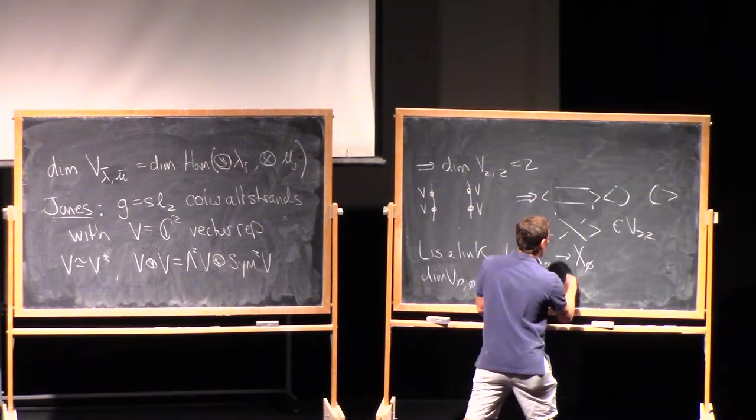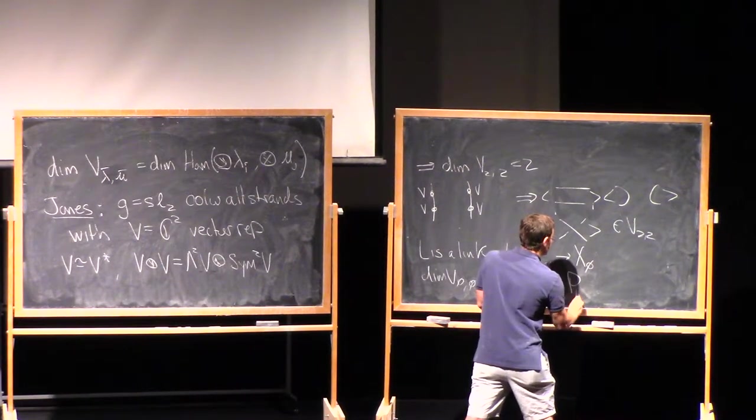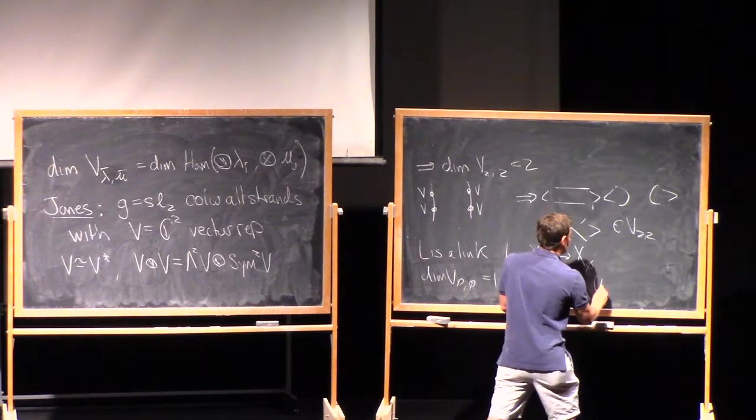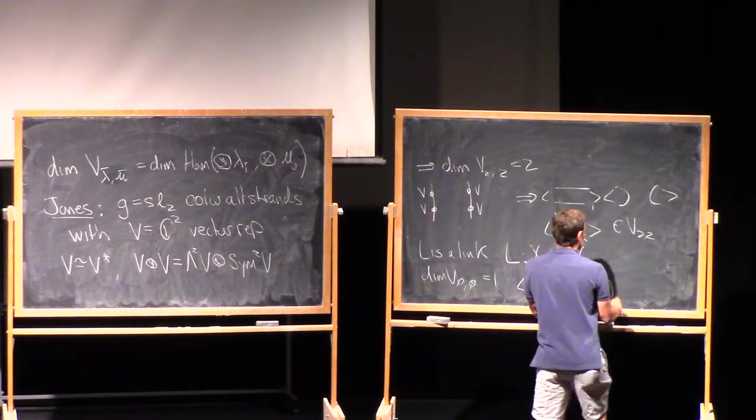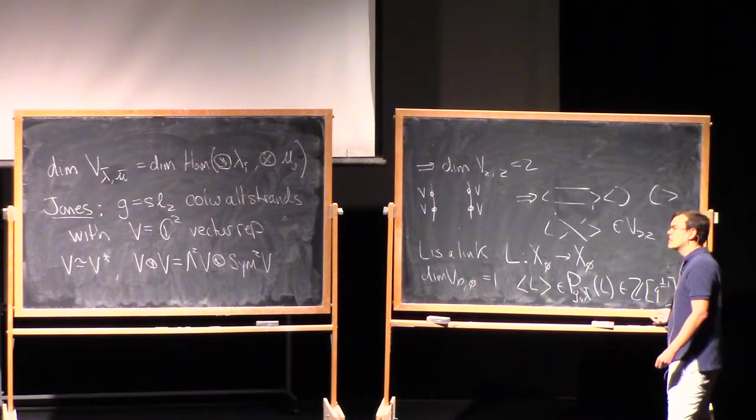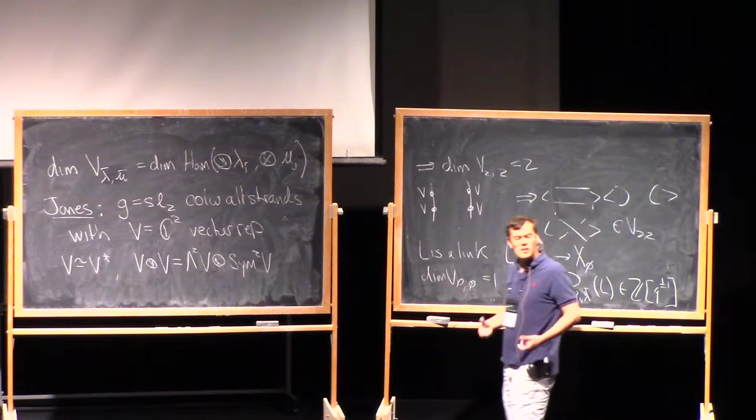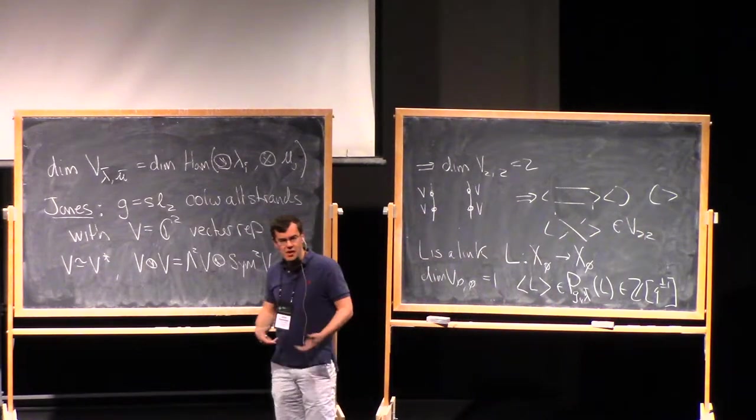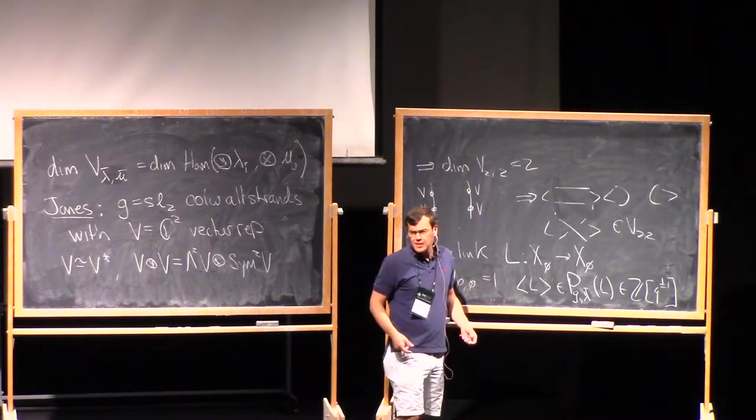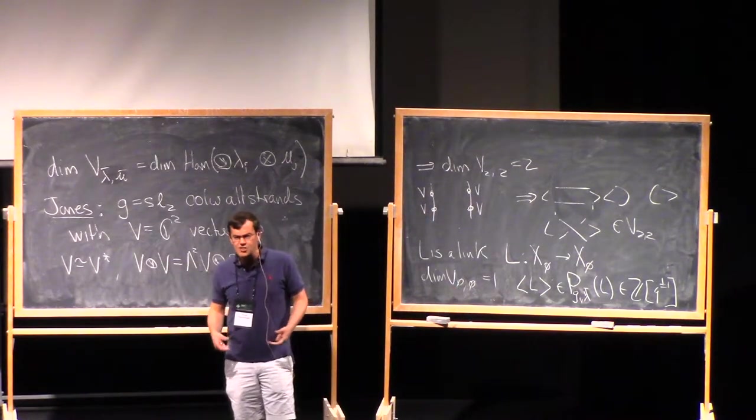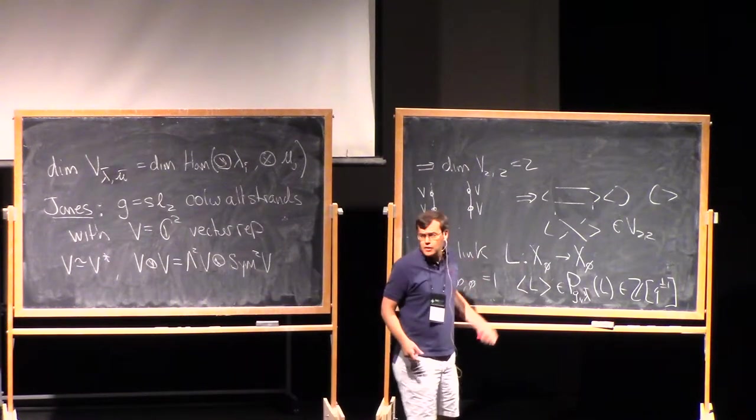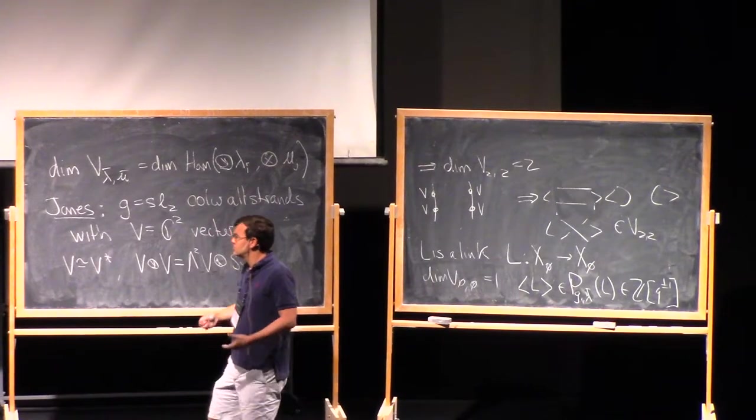Here in this tensor product, I have no representations. So this v empty empty is always one-dimensional. So the bracket of L, I can think about as being a polynomial, which I'll label P_G lambda, that's the coloring of L. And that's a polynomial in Z adjoin Q plus or minus one. So in fact, this theory of quantum invariants gives us a whole pile of polynomial invariants of knots. Anytime I have a Lie algebra and I pick a bunch of representations and color the strands, I get some knot polynomial. And of course, that's a lot of information, and a very sensible question is to ask whether there's any relation between all of these different polynomials.